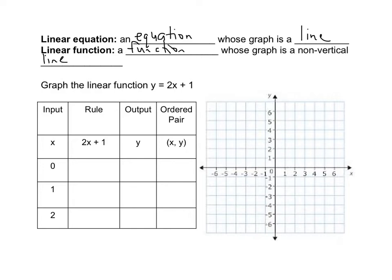So we're going to graph a linear function, y equals 2x plus 1. So once again, we have our input, which is x, our rule, which is 2x plus 1, our output, which creates the ordered pair.